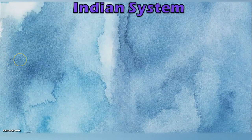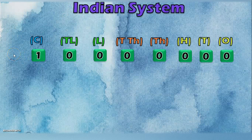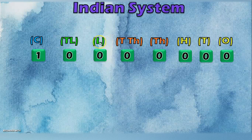Before going into examples, let us first understand the place values in the Indian System and the International System. I am considering the example of an 8 digit number: 1 followed by 7 zeros. In the Indian place value chart, the place values are: 1s place, 10s place, 100s place, 1000s place, 10,000s place, lakhs place, 10 lakhs, and because it is an 8 digit number, the place value crore. So when you put 1 followed by 7 digits in the Indian place value system, you get the number 1 crore.